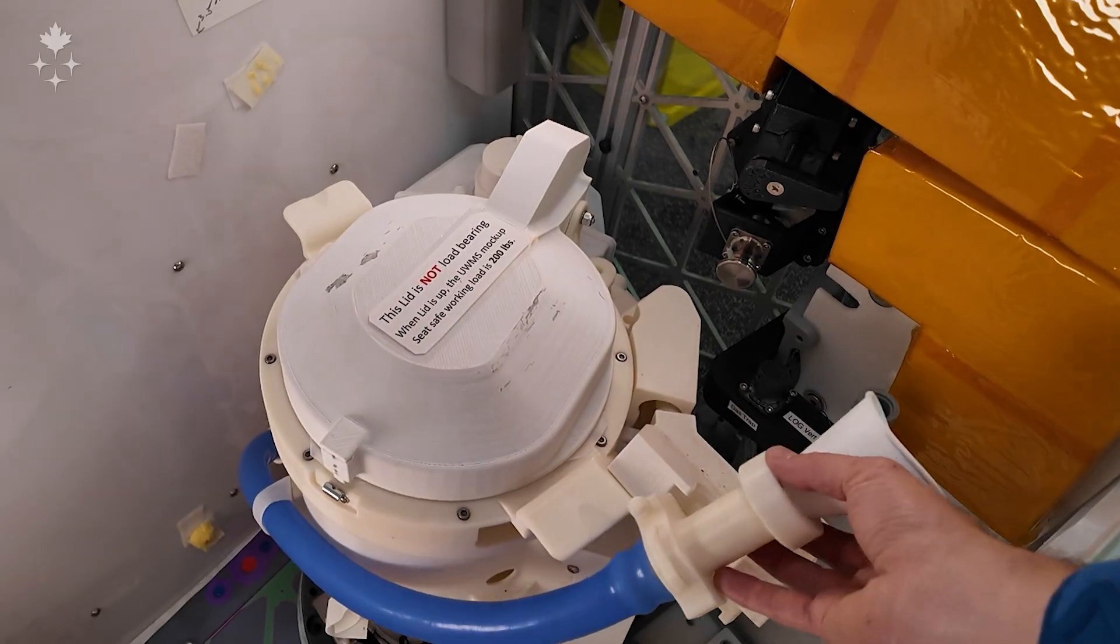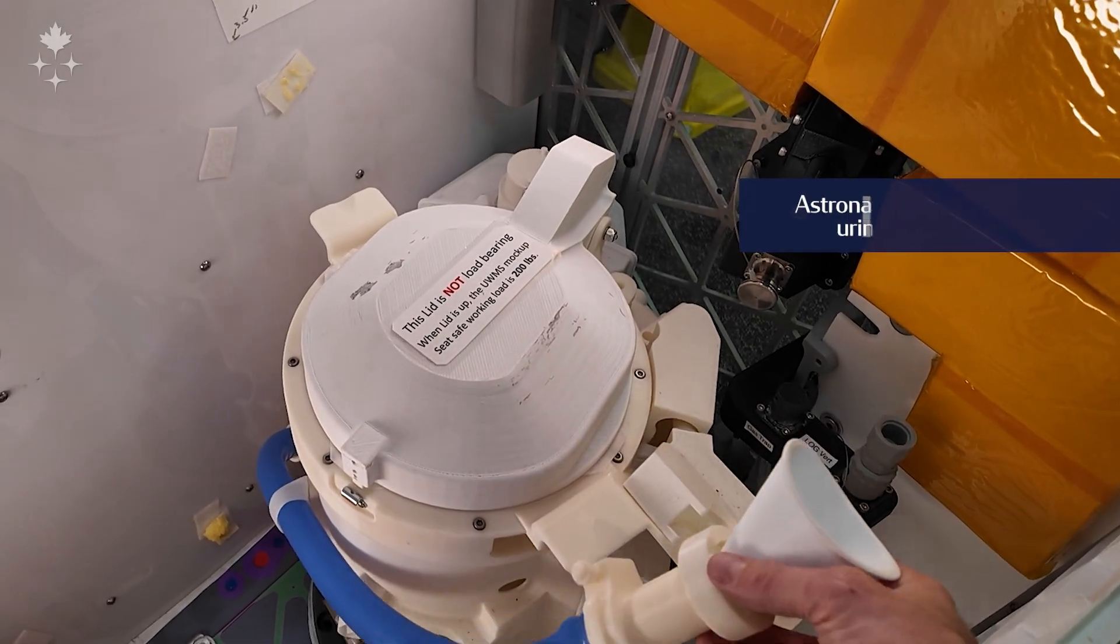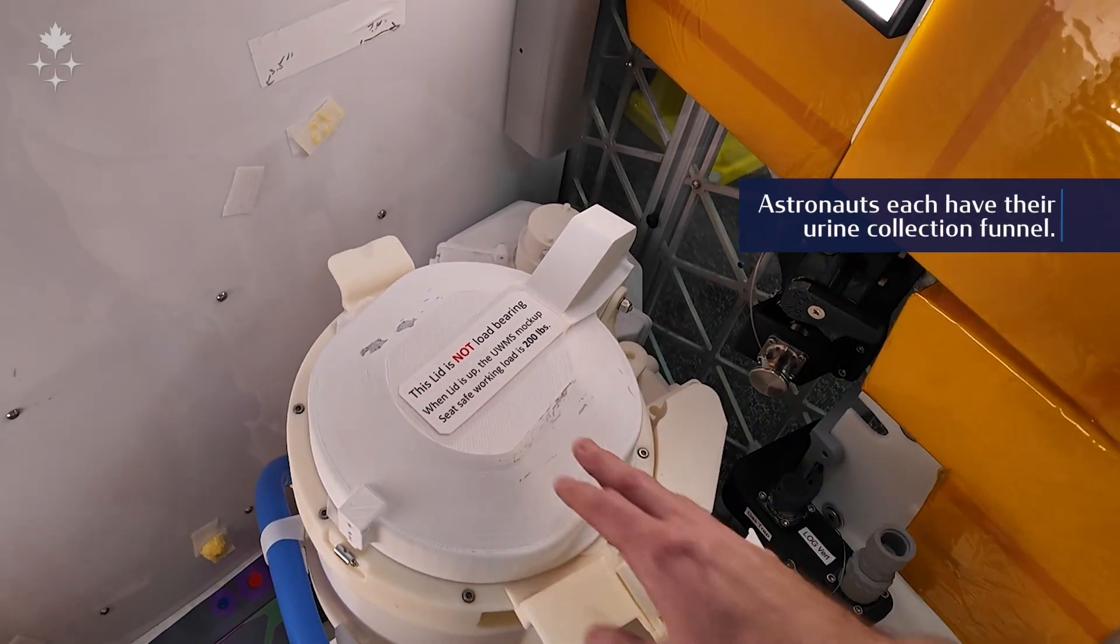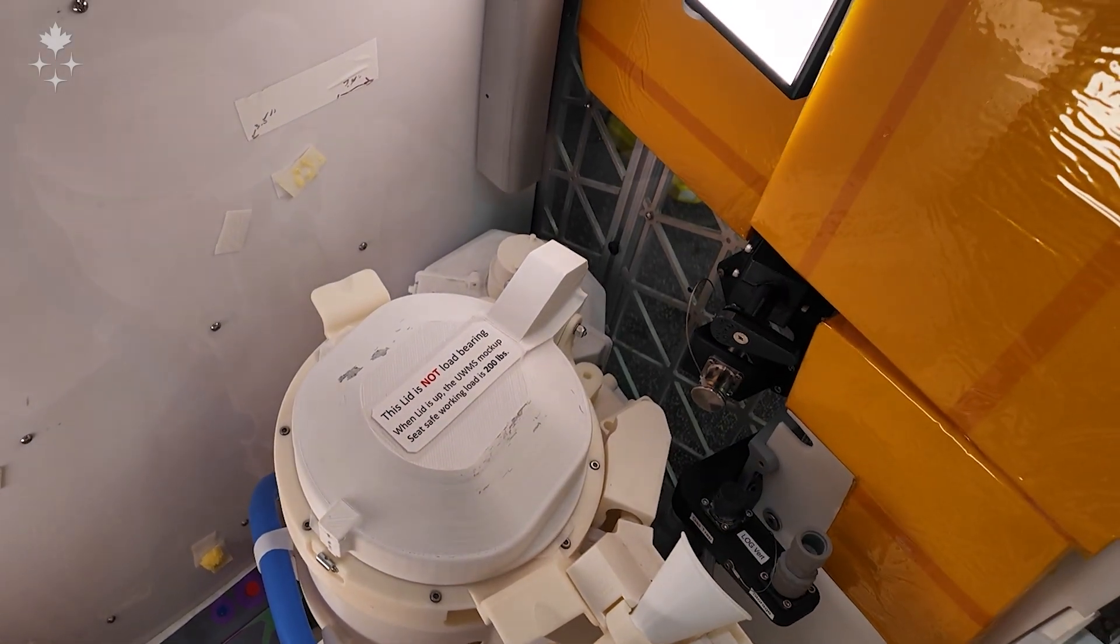You have a urine hose. So this is where you collect all your urine. And then this is just like a toilet seat and this is where the solid waste is collected.